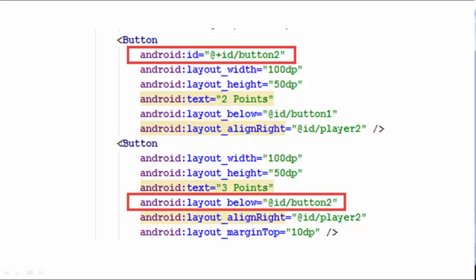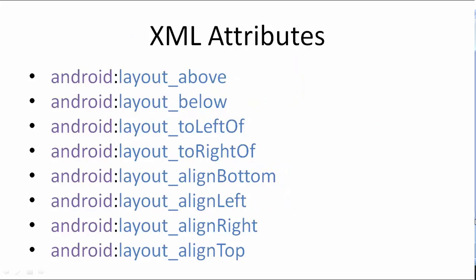Since this button is going to position itself below the first button, it requires the ID of that first button so it can position itself below it. Here are XML attributes that position views relative to other views: layout_above aligns a view above another view; layout_below aligns a view below another view; layout_toLeftOf places a view to the left of another view; layout_toRightOf places it to the right. layout_alignBottom aligns the bottom edge with the bottom edge of another view; layout_alignLeft aligns left edges; layout_alignRight aligns right edges; layout_alignTop aligns top edges.